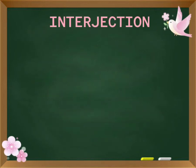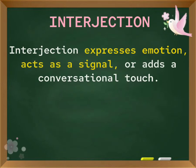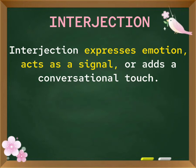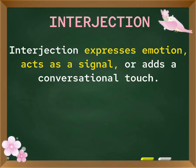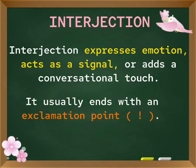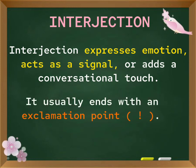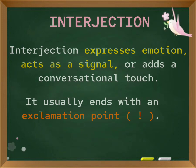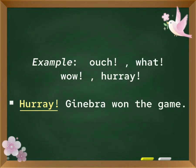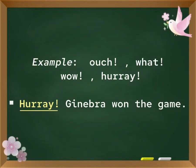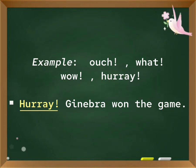Interjection. An interjection expresses emotion, acts as a signal, or adds a conversational touch. It usually ends with an exclamation point. Examples: Ouch! What? Wow! Hooray! Hooray! Ginabra won the game!